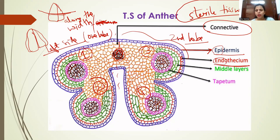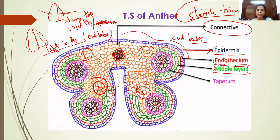After the endothecium, there are two to four layers of similar cells known as the middle layer. These middle layers consist of parenchymatous cells of the same type.